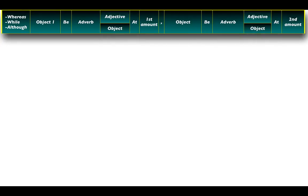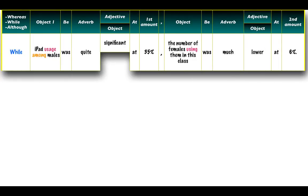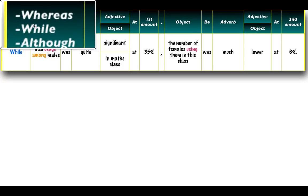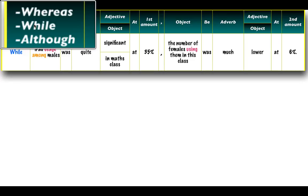The formula begins with the words 'whereas,' 'while,' and 'although.' These three words are from the 'but' family — they are synonyms of 'but' and are used when we are comparing and contrasting. They work very well at the beginning of a sentence, and my advice is to put them there because this demonstrates lexical resource and grammatical range and accuracy.